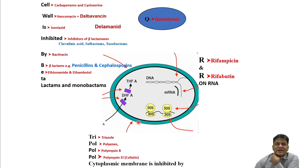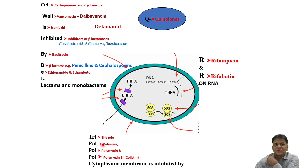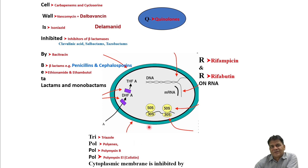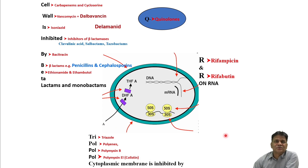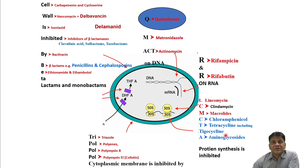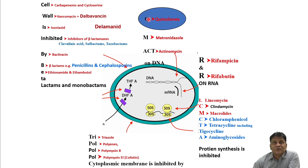Antibiotics acting on the cytoplasmic membrane — the inner bilayer — include triazoles, polyenes, polymyxin B, and polymyxin E (also called colistin). These are active against cell membrane synthesis; there is a slight difference between the cell walls of fungal agents, mammalian cells, and bacteria. Most of these antibiotics act on fungal agents and are somewhat toxic, but we have no option other than using them to treat fungal infections.